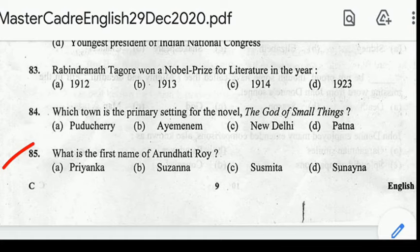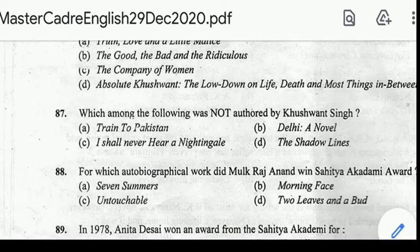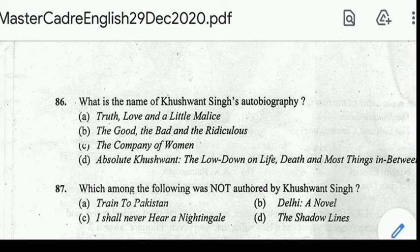Number 85: what is the first name of Arundhati Roy? Correct answer: option B, Suzanna is the first name of Arundhati Roy. Number 86: what is the name of Khushwant Singh's autobiography? Correct answer: option A, Truth, Love and a Little Malice.